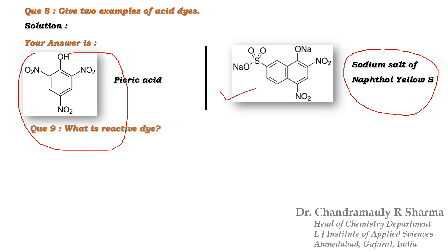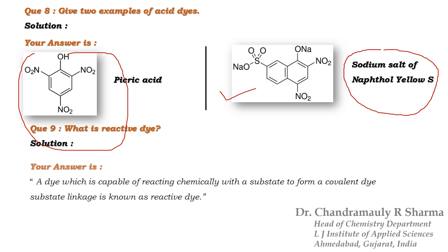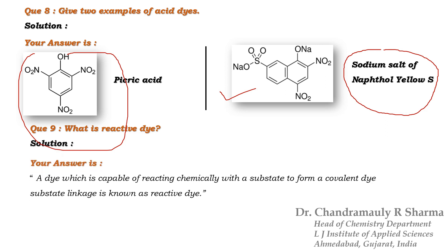Next question: What is a reactive dye? This is also a very fundamental definition of this chapter, so we can write the answer directly. A dye which is capable of reacting chemically with a substrate to form a covalent dye-substrate linkage is known as a reactive dye.